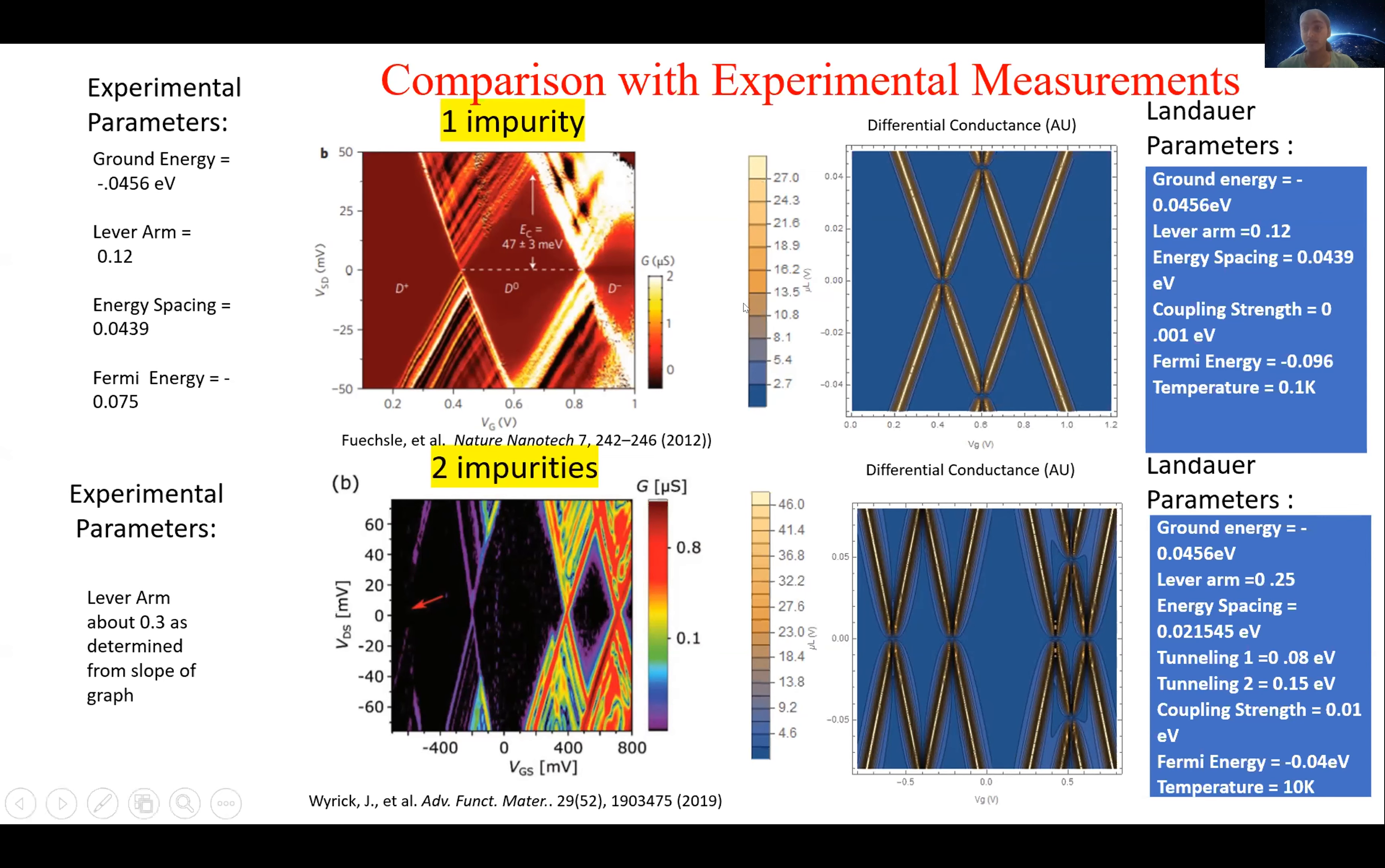For the one atom system, we start with all the same experimental parameters, and the only thing we have to modify is the Fermi energy. This is very promising for the Landauer model because the Fermi energy is a characteristic of the metal leads, which is very variable amongst different experimental systems.